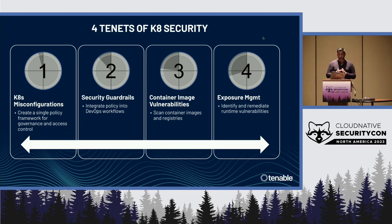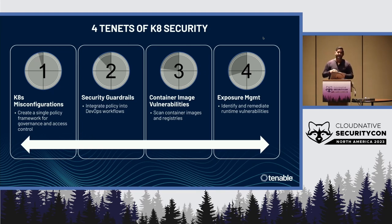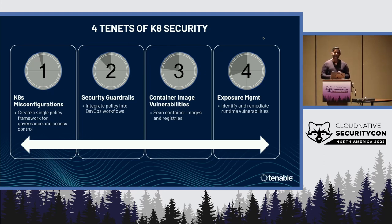It's very important to scan your images before they get into your runtime — because one CVE, one vulnerability, is propagated multifold times in your production runtime environment. And finally, once you have all three pieces in place, it's important to look at the whole picture together: how you apply exclusions, how you remediate, putting in automated processes to do that. That's the last step.